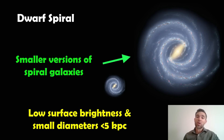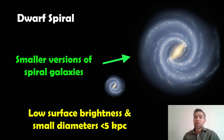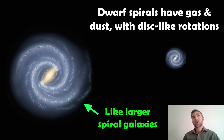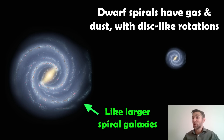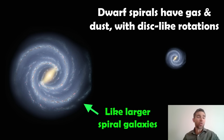Dwarf spiral galaxies are smaller versions of spiral galaxies, characterized by quite low surface brightness and a typically small diameter — around five kiloparsecs and below would classify as a dwarf spiral. Like their larger counterparts, they do have gas and dust, disk-like rotation, and are likely experiencing star formation. Composition-wise, they are fairly similar to the larger spiral galaxies.